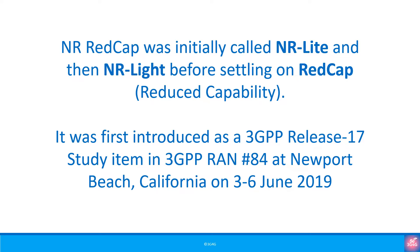This feature was first introduced as a 3GPP Release 17 study item in 3GPP RAN meeting number 84, which was held in June 2019. The study is detailed in 3GPP Technical Report 38.875. You can find the references and the link at the end of this presentation, and the slides are available on our SlideShare channel. Note that TR 38.875 is over 130 pages long, so if you want to seriously study this topic, you need to download the report.